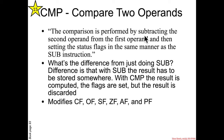We'll see compare now and test later. Compare performs the comparison by subtracting the second operand from the first operand and then setting the status flags in the same manner as the sub instruction. The difference from subtract is that with subtract you have two operands and the result goes back into the left-hand register. With compare you do not store the result of the subtraction — you just set the flags and throw the result away. You will very frequently see compare instructions immediately preceding conditional jump instructions.